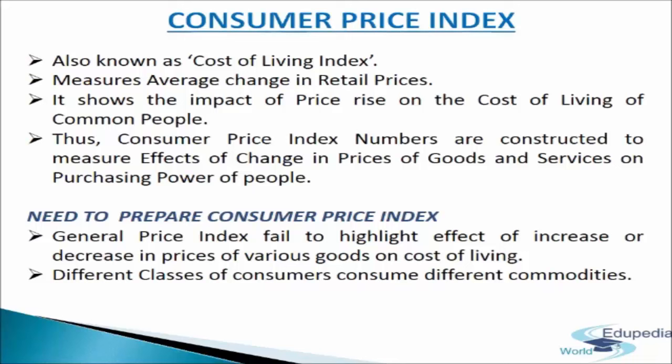In India, three CPIs are constructed. They are: CPI for industrial workers with 1982 as base year, CPI for urban non-manual employees with 1984–85 as base year, and CPI for agriculture labourers with 1986–87 as base year. They are routinely calculated every month to analyse the impact of changes in retail prices on the cost of living of these three broad categories of consumers.